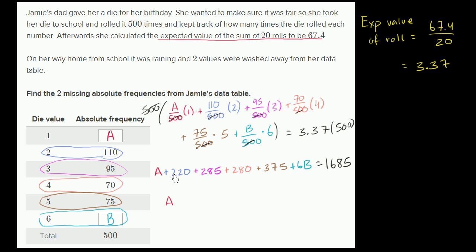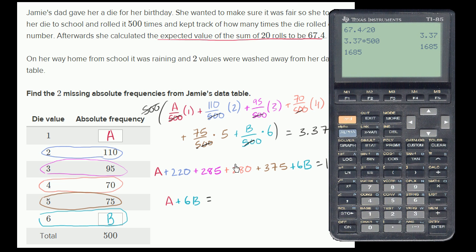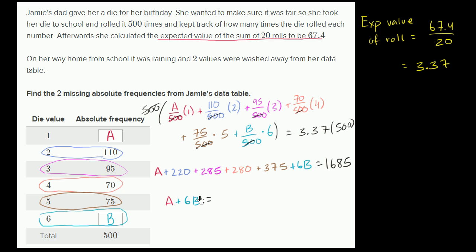A plus 6B, and on the right-hand side, we are going to get, let's get our calculator out, 1,685 minus 220, 220, minus 285, minus 285, minus 280, minus 375, minus 375, gets us to 525. So we get A plus 6B is equal to 525.